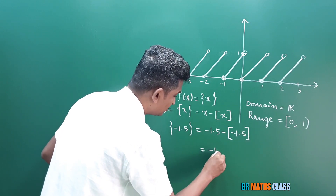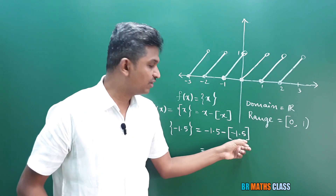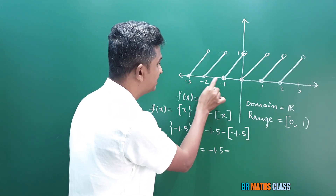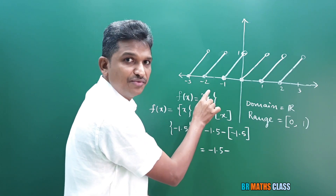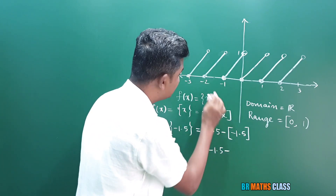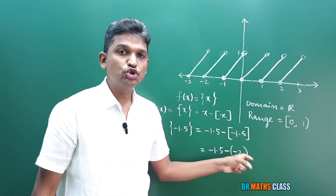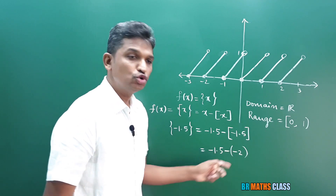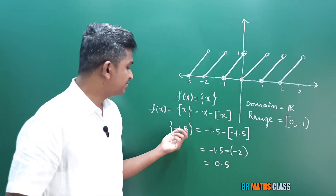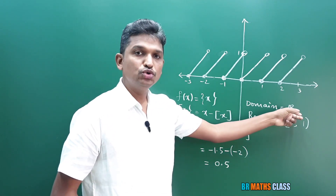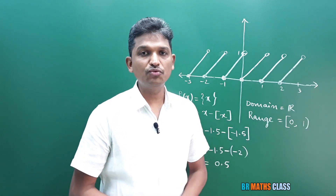Let's see what we get. Minus 1.5 minus ⌊minus 1.5⌋. Here minus 1.5 lies in between minus 2 and minus 1. The integer on the left-hand side is minus 2, so ⌊minus 1.5⌋ = minus 2. So we get minus 1.5 minus (minus 2), which gives minus 1.5 plus 2, equals 0.5. Whatever real value you take, this fractional part function always gives a number in between 0 and 1.